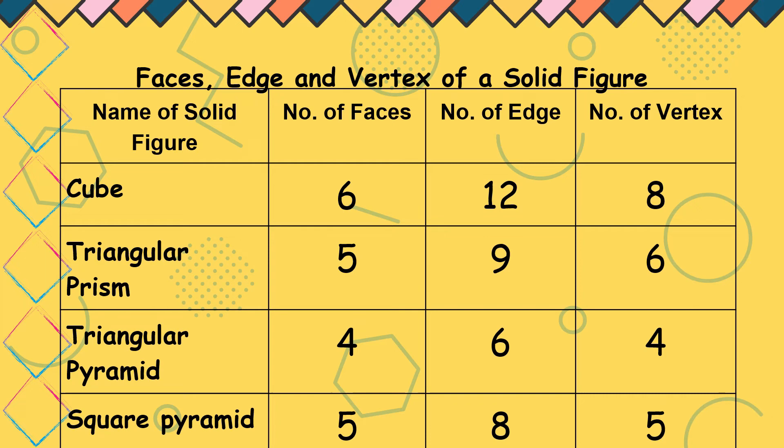The triangular prism, 5 faces, 9 edges, then 6 vertices. Triangular pyramid, 4 faces, 6 edges, and then 4 vertices.